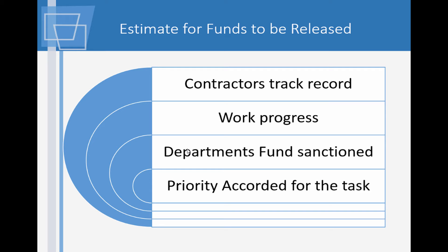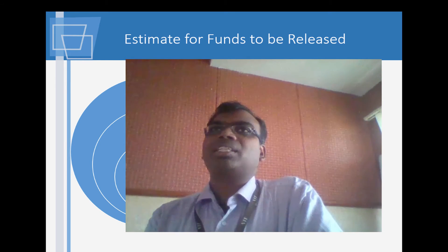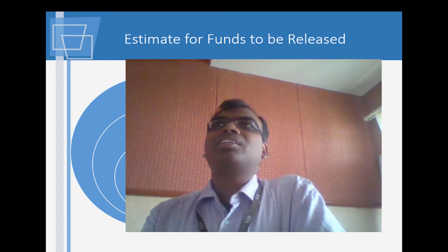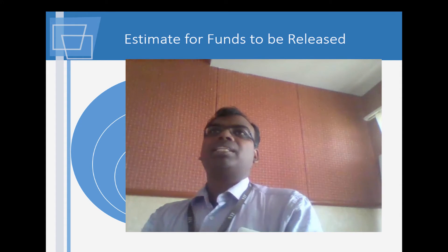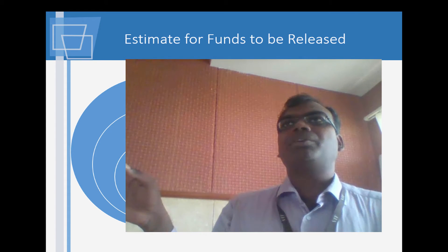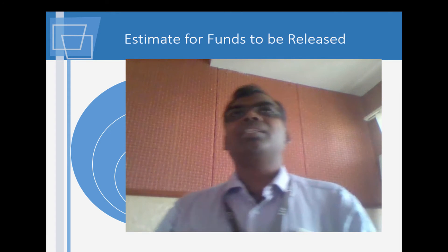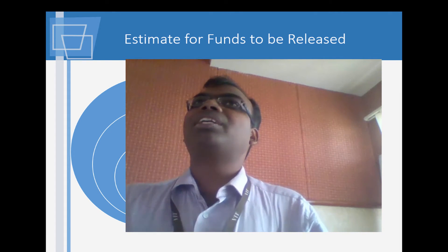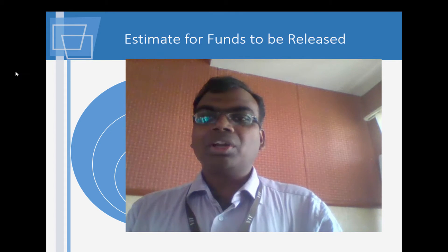There is yet another type of estimate done in government agencies — the estimate for release of funds. In one particular work of importance to the state, assistant engineers would say the contractor is not doing the work. The problem is the agency asks the government to release funds. They budget funds for each quarter — every three months they have a budget prepared. If they say they'll finish 10 crores of work but the contractor is not billing, that 10 crores has to be returned to the treasury with an explanation of why the funds were not used.